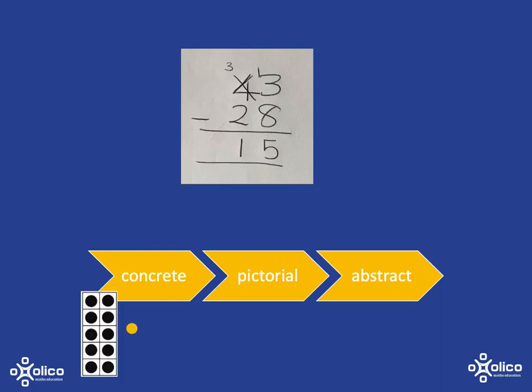For the concrete process, we're going to be using the filled 10 frames and counters, and learners are actually going to physically move those about in order to do the subtractions. As they get more comfortable with that, we're going to start to do a pictorial representation of that alongside it and then slowly start to add in the abstract representation too. But there is no point in rushing this process—let learners get completely comfortable at each stage so that they really develop a good understanding that'll allow them to use the skill well.